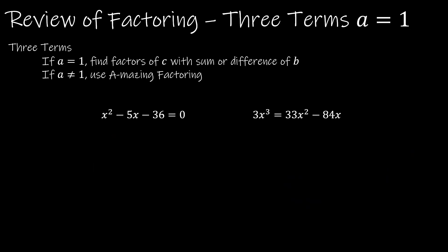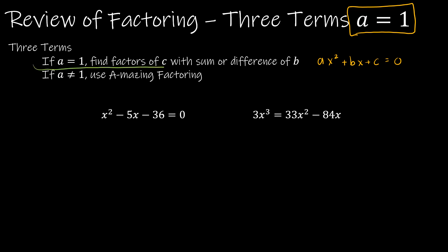Let's move on to three terms. With three terms I'm going to break it into two parts: one where a is equal to 1 and one where a is not equal to 1. When a equals 1, I'm talking about a quadratic ax squared plus bx plus c equals 0, where the coefficient for x squared is 1. This is a little bit easier to factor. We're going to find factors of c with a sum or difference of b.